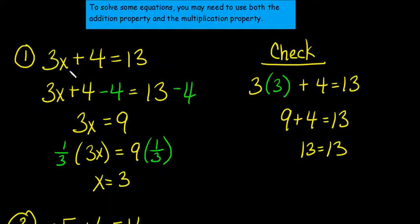So, this equation is 3x plus 4 equals 13. If you notice, the first thing I need to do is take 4 away from both sides, and it's the same as saying adding a negative 4. So, I'm subtracting 4 from both sides. And when I do that, now my 3x equals 9.